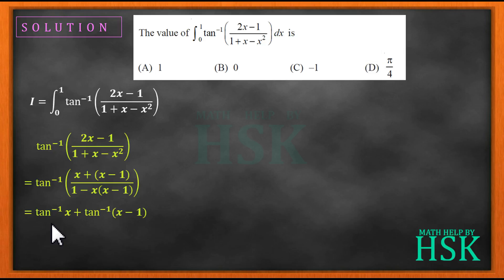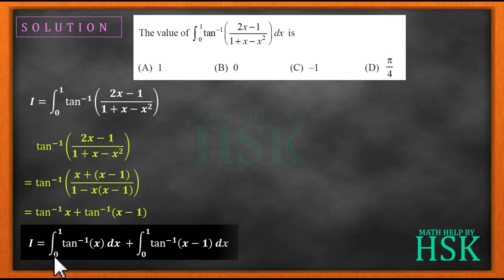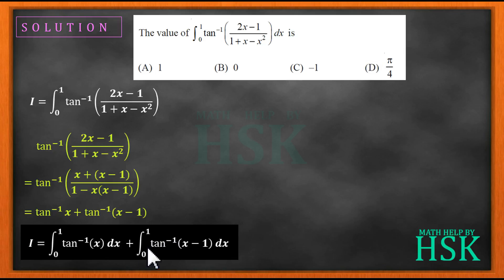Placing this value — tan⁻¹(x) + tan⁻¹(x-1) — into the definite integral, I write I = ∫tan⁻¹(x)dx from 0 to 1 plus ∫tan⁻¹(x-1)dx from 0 to 1. I mark this as equation number 1.